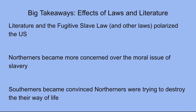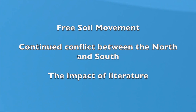Big takeaways — Effects of Laws and Literature: the effect of the Fugitive Slave Law and the anti-slavery and pro-slavery literature was polarizing throughout the nation and added to the divide between the North and the South. Northerners who had earlier scorned the abolitionist cause now became concerned about the moral issues posed by slavery. At the same time, a growing number of Southerners became convinced that the North's goal was to destroy the institution of slavery and the Southern way of life. I hope this information helps you better understand the Free Soil Movement, the continuing conflict between the North and the South in the mid-1800s, and the impact that literature had on the abolition movement.